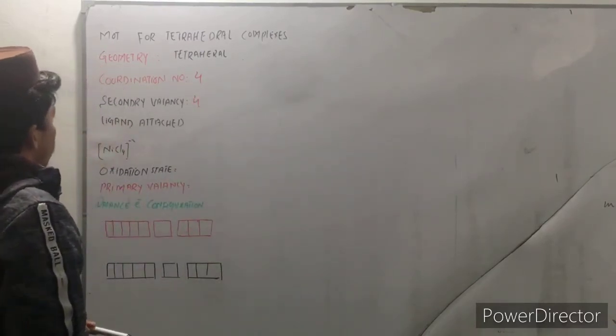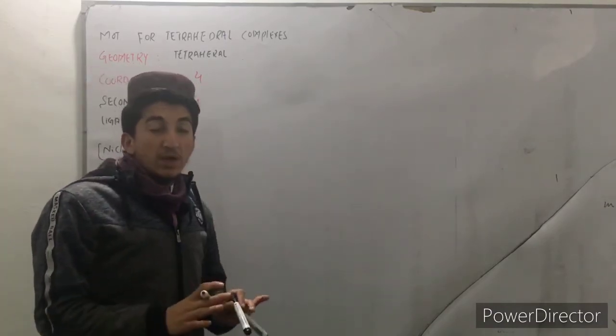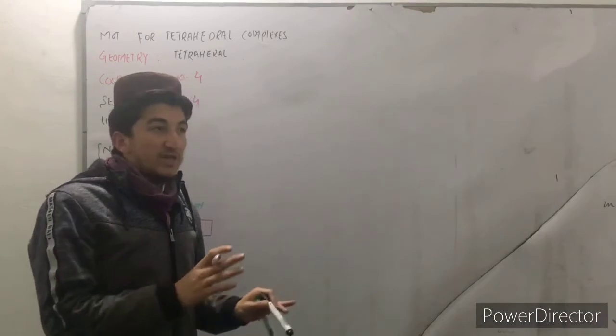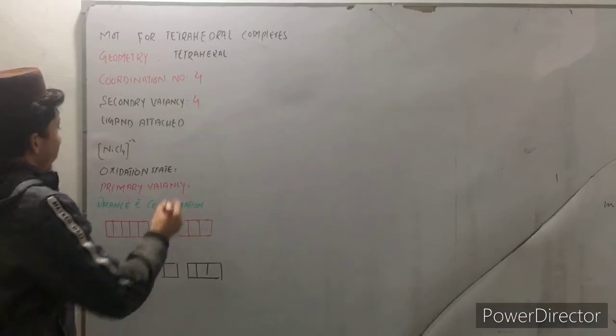In tetrahedral complexes the ligand attached is weak ligand because if it is strong ligand it will give us a square planar complex. So that is why the ligand attached over here is weak.